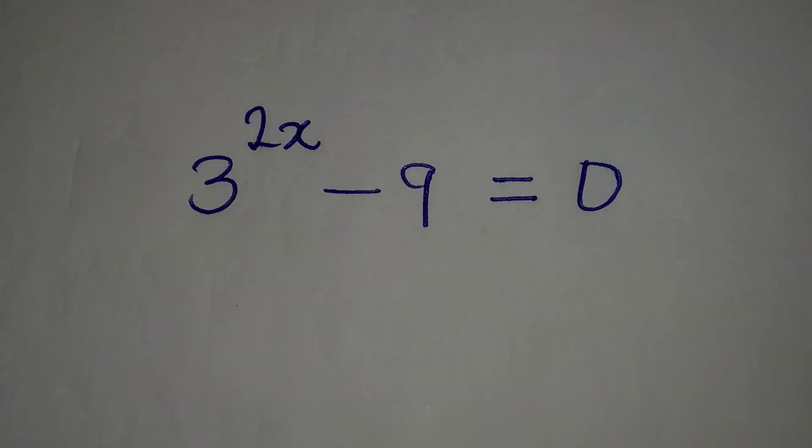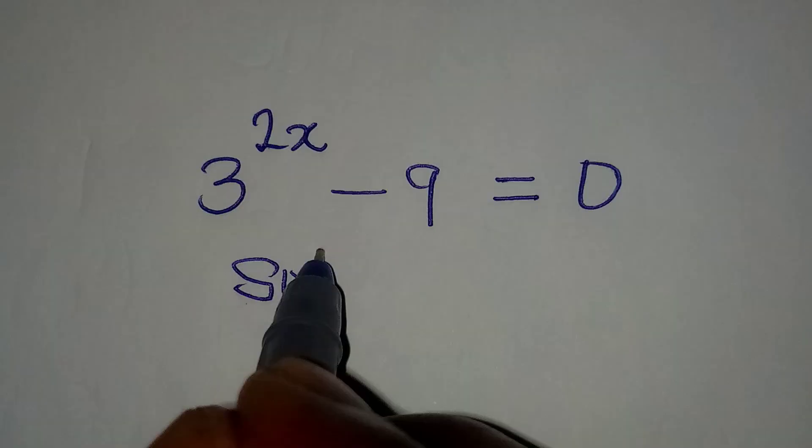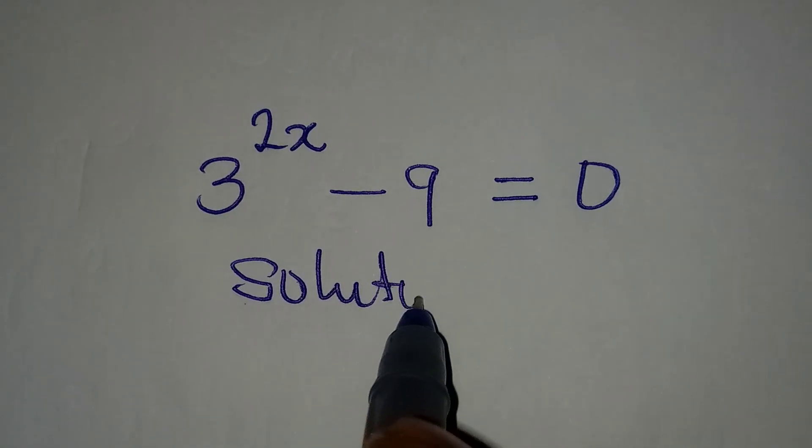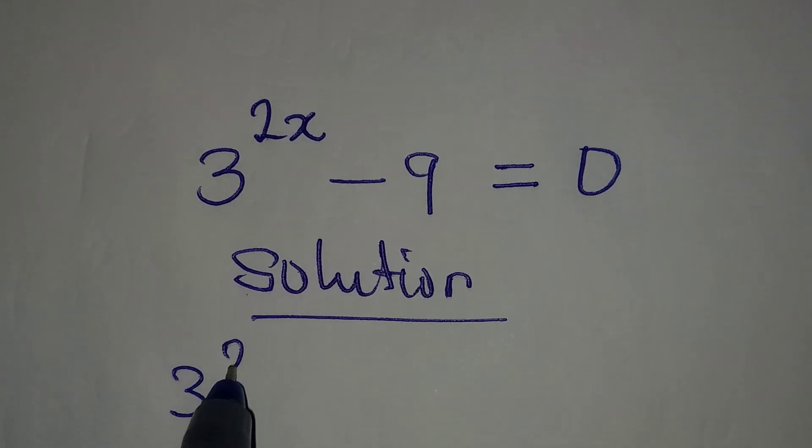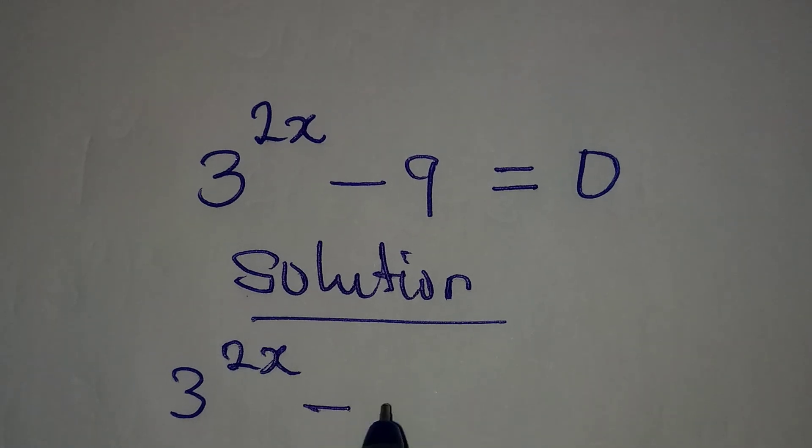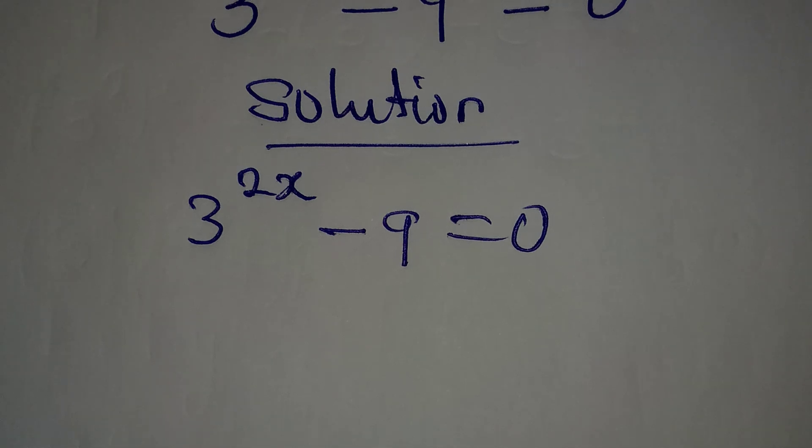Hello everyone, let's provide a solution to this problem very quickly. Before I solve this problem, I have a question for you: this is 3 to the power of 2x minus 9 equal to 0. Now a couple of persons would say that this is too simple, right?